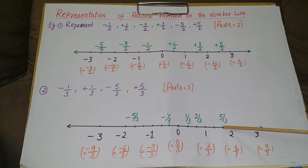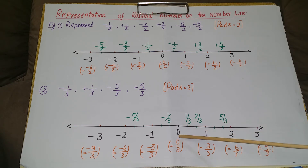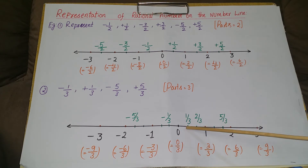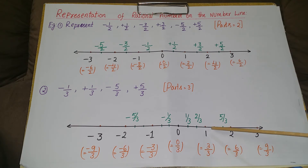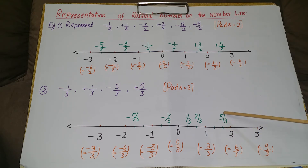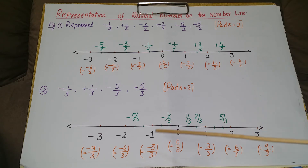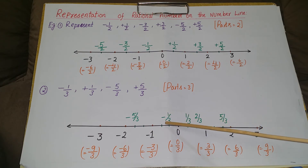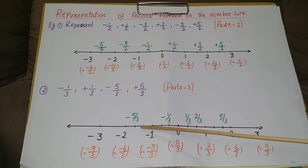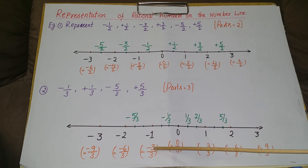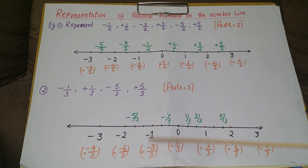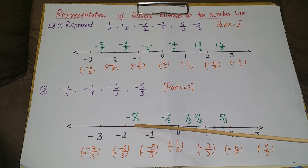We can count: 0/3, 1/3, 2/3, 3/3, 4/3, 5/3 — or directly, since 5 comes between 3 and 6, the fifth division is 5/3, so write 5/3 here. On the left side, write -1/3 and -5/3: looking at -3, the next are -4 and -5, so -5/3 goes here.